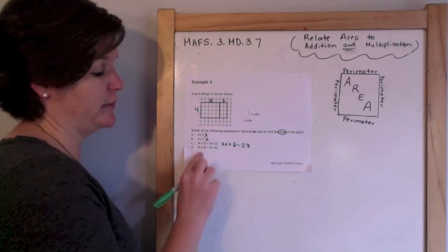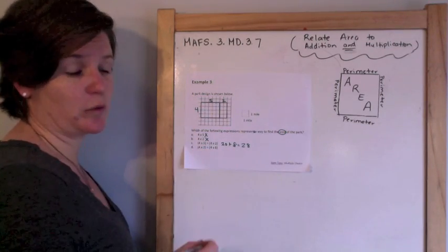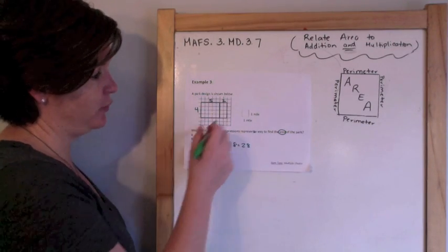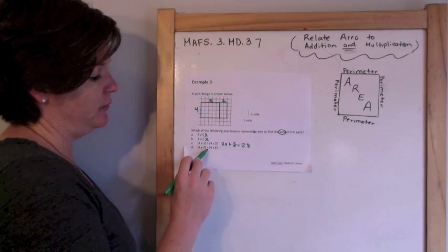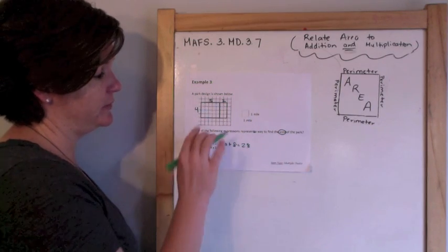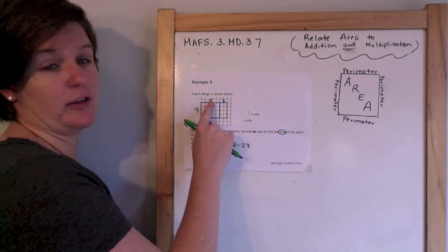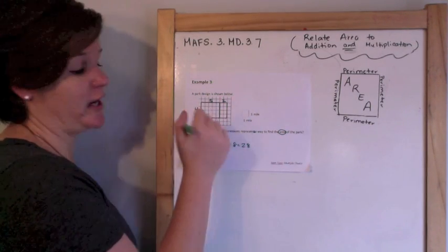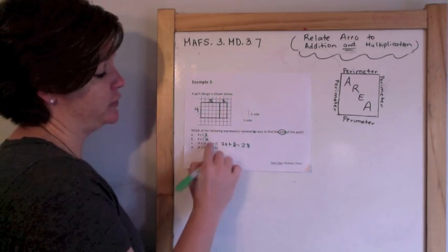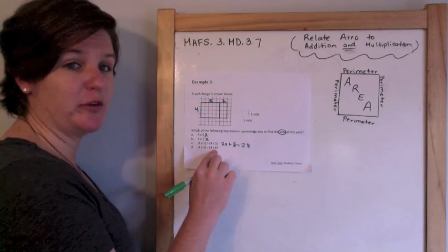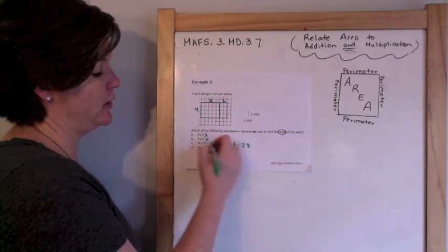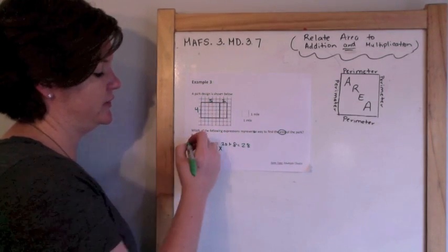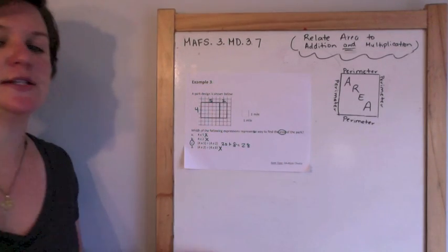Let me make sure D is wrong: 4 times 2 plus 4 times 6 — it should be 4 times 5, not 4 times 6. If this were 4 times 5 it would be right, but 4 times 6 makes it wrong. So C is my answer.